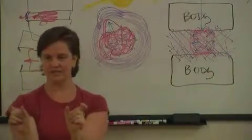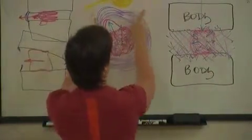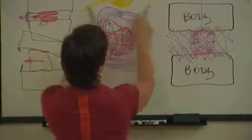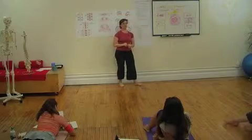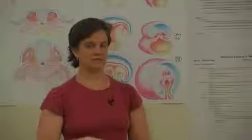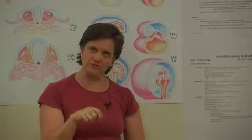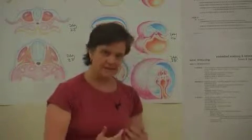Where that gap is is where the disc bulge happens most often because the spinal ligaments are not there. It's not that forward bending movements are worse than backward bending movements, it's just that that is the part of the vertebra that's vulnerable to forward bending.